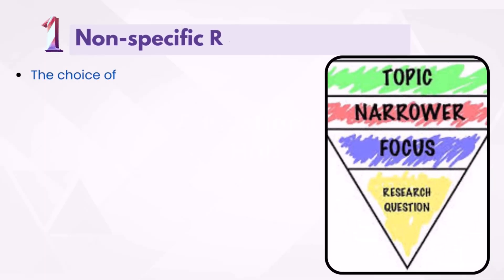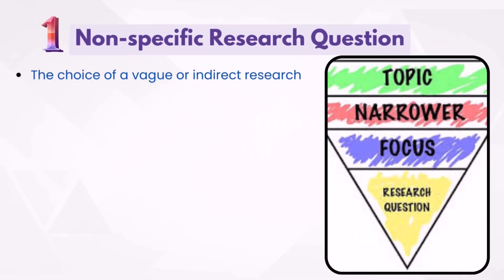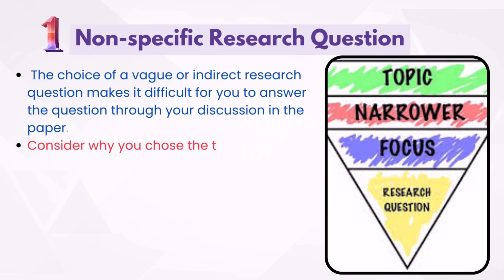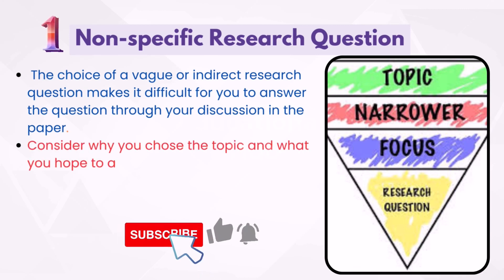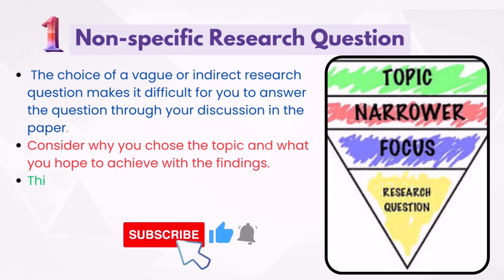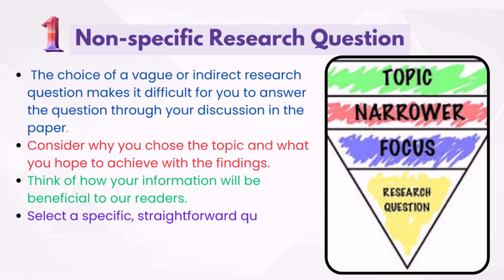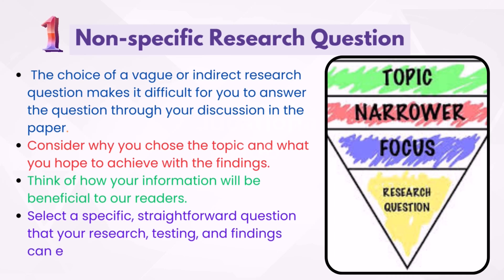1. Nonspecific Research Question. The choice of a vague or indirect research question makes it difficult for you to answer the question through your discussion in the paper. Consider why you chose the topic and what you hope to achieve with the findings. Think of how your information will be beneficial to your readers. Select a specific, straightforward question that your research, testing, and findings can easily answer.